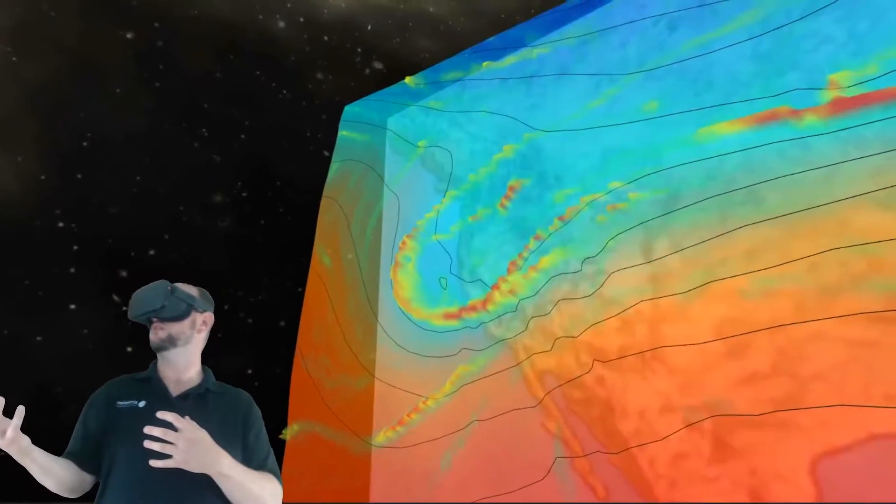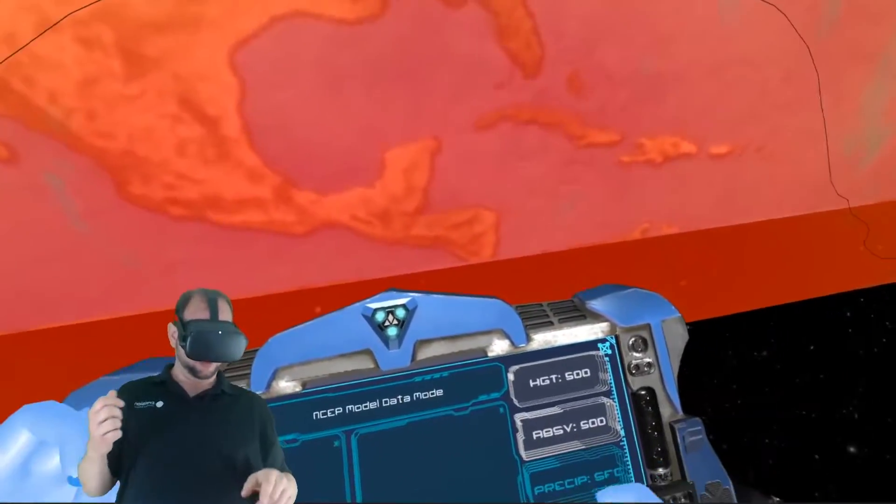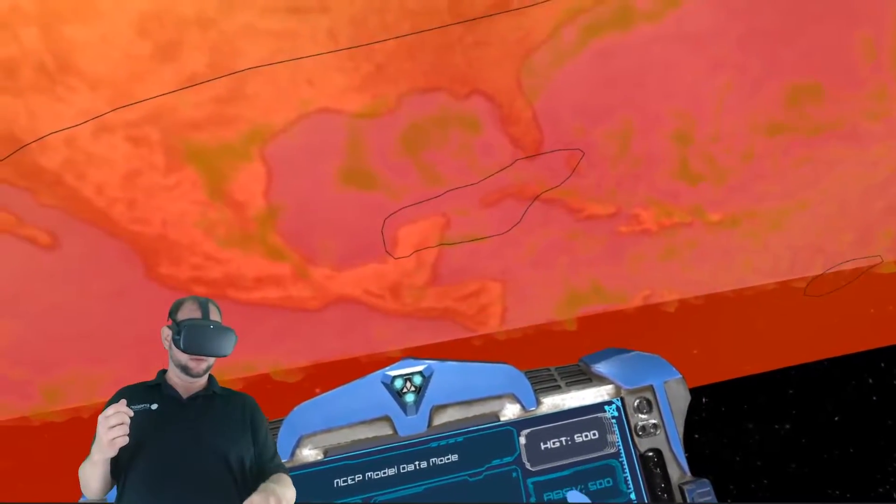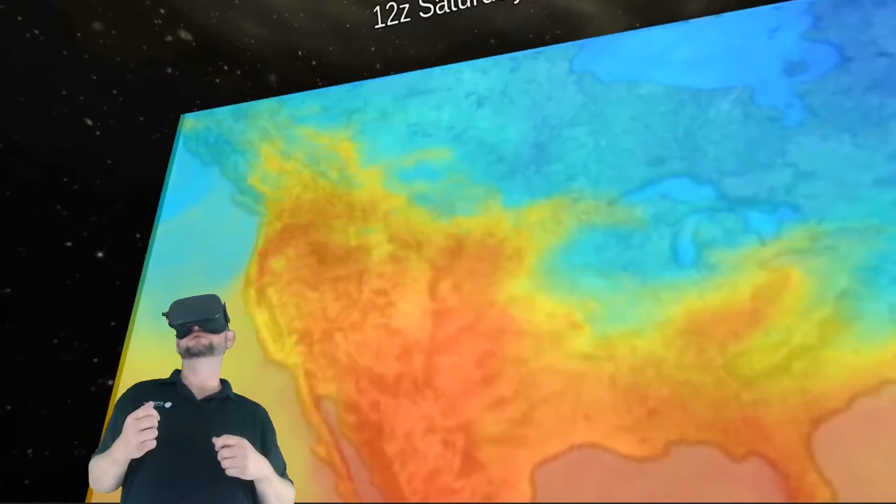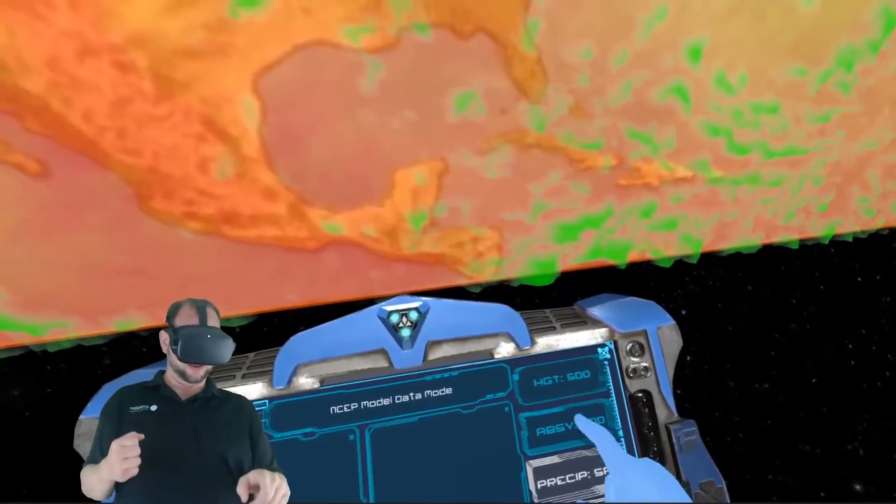You can also plot precipitation, surface temperatures, and plot them all together.